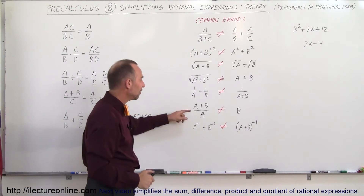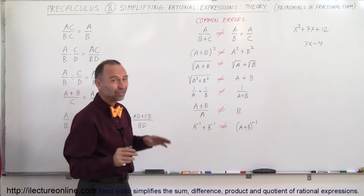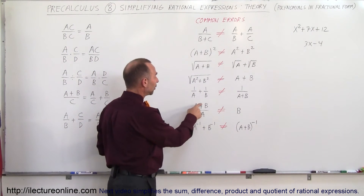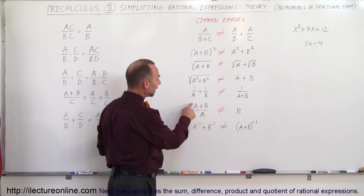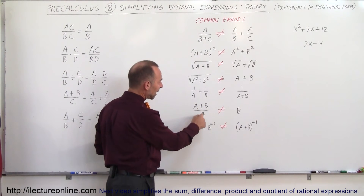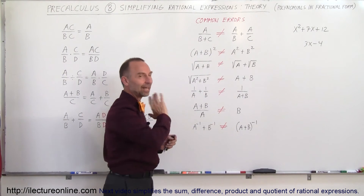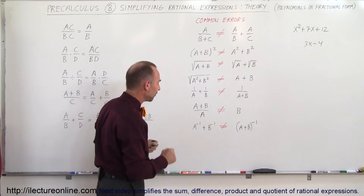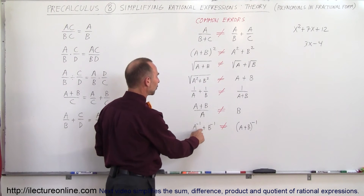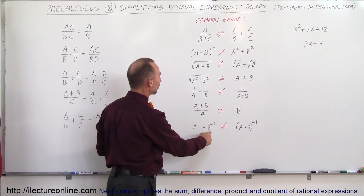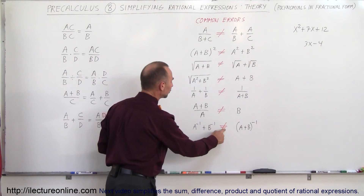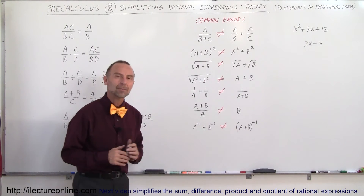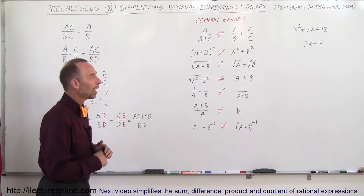Another error I see a lot of students make: given (a plus b) divided by a, they cancel the a's and are left with just b. You cannot do that — it is not correct. Finally, a to the minus 1 plus b to the minus 1 is not equal to (a plus b) to the minus 1. These are very common mistakes.